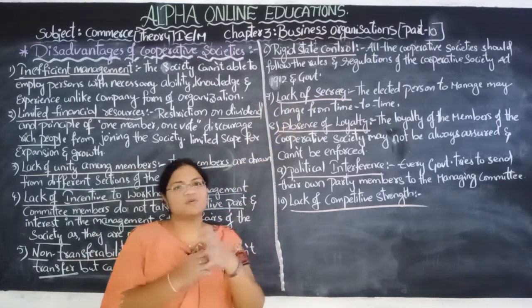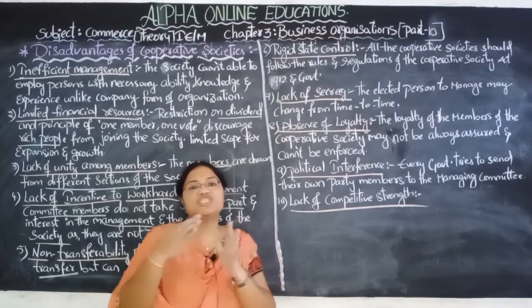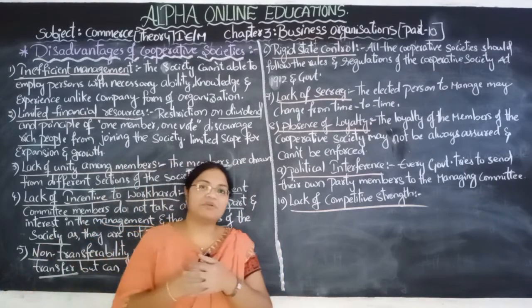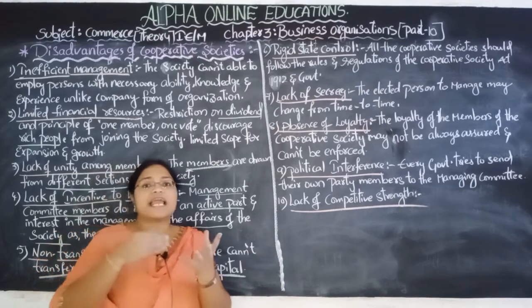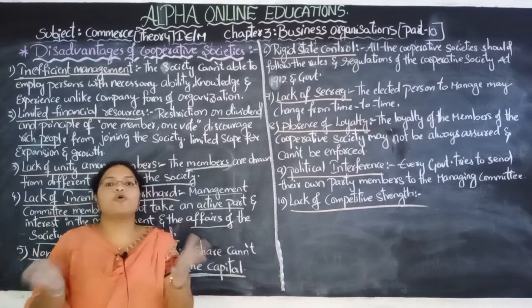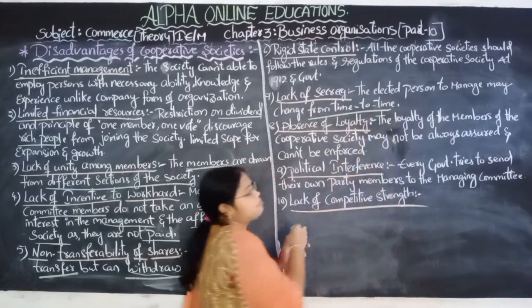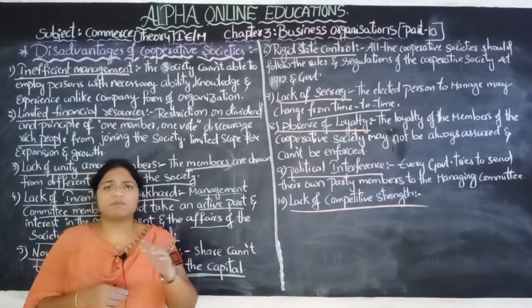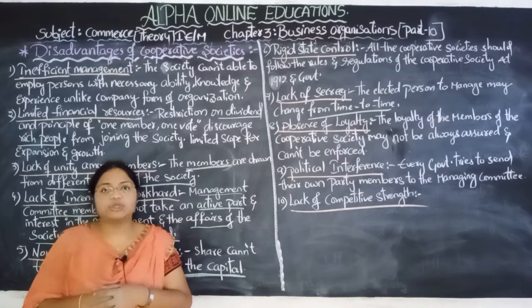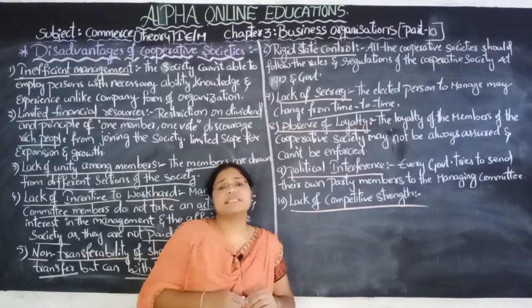The next disadvantage is lack of secrecy. There is no secrecy in the society because the elected committee members change from time to time. When they change, the secret information regarding the cooperative society is exposed to everyone, and every member knows what is actually going on. There is no stability of persons — one elected person leaves and another comes. These changes are continuously happening, so there is no secrecy in the cooperative society. This is the biggest disadvantage of cooperative societies.